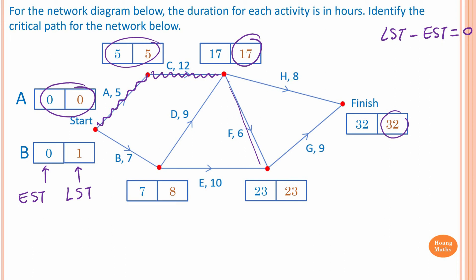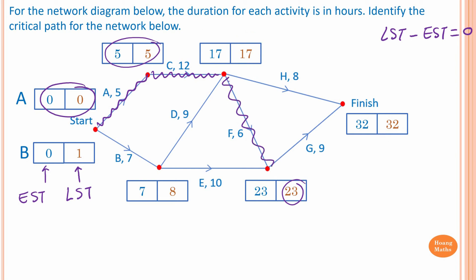The correct path is this one here, because 23 minus 6 is 17. So it's activity F, not activity H — please take note and do not confuse them. The next activity on the critical path is activity G. Therefore, the critical path of this network is A to C to F to G.